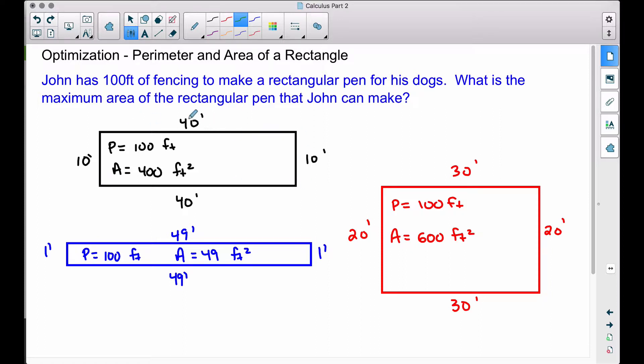The black rectangle you see here, 40 plus 10 plus 40 plus 10, that is 100 feet of fencing around that rectangle. The area of that rectangle is 400 square feet, 40 times 10.